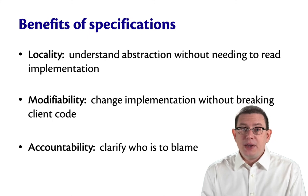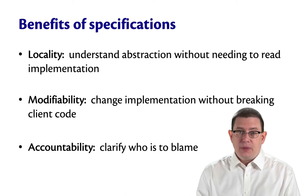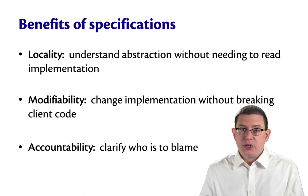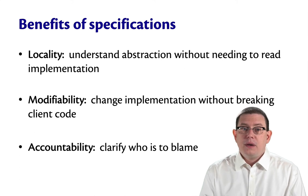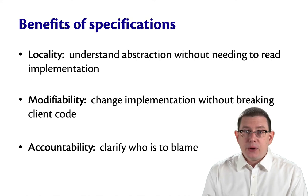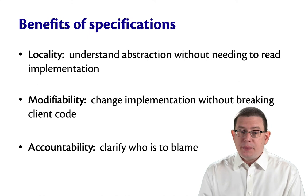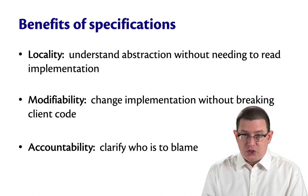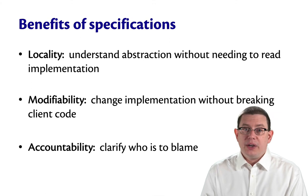Specifications give us a lot of benefits in terms of modular programming. They help us with locality — we can understand an abstraction without needing to read the implementation of it when the specification gives enough information to the clients. Specifications also help us with modifiability. By clarifying exactly what it is the code is supposed to do, the implementer, as they evolve the code later in time, gets to change that implementation without breaking the client code because it was clear what the client could rely on.